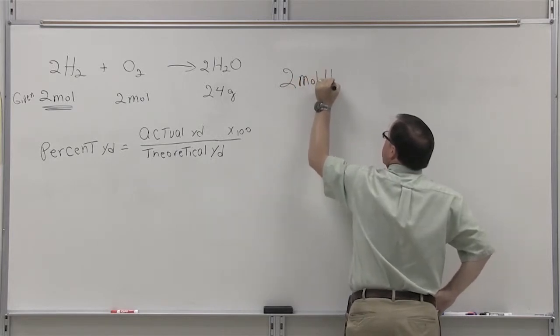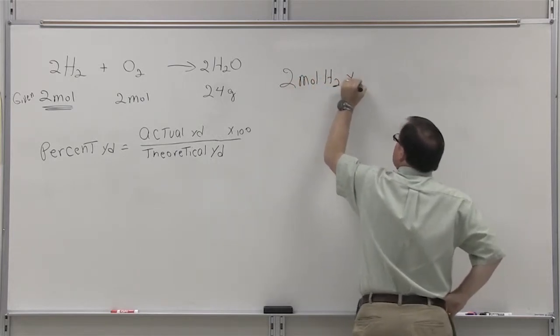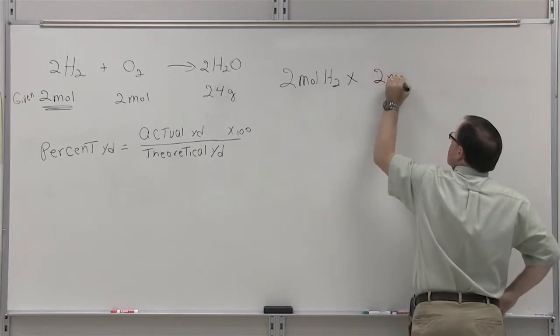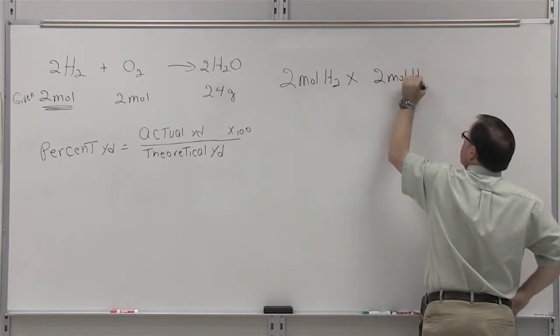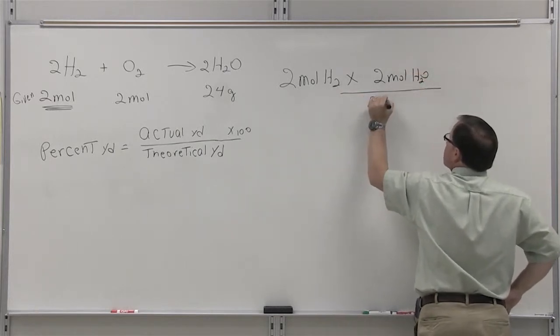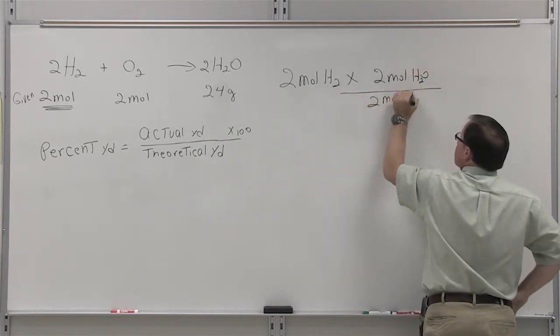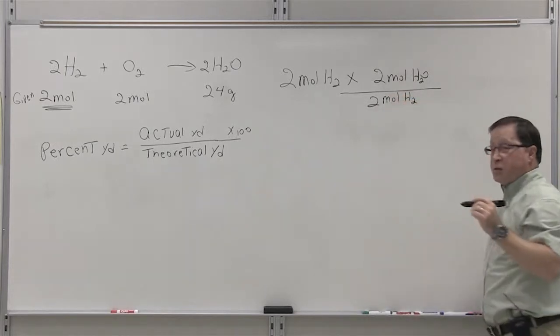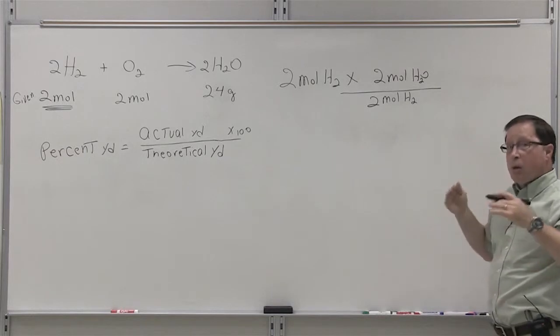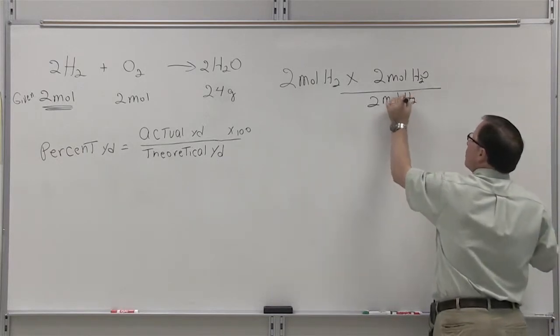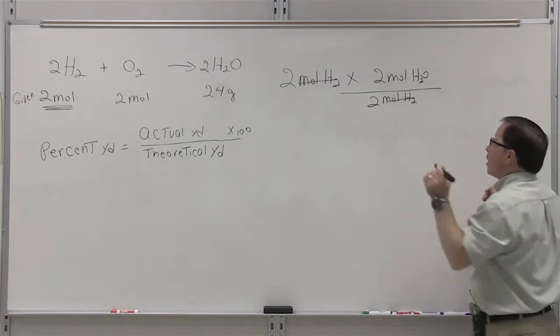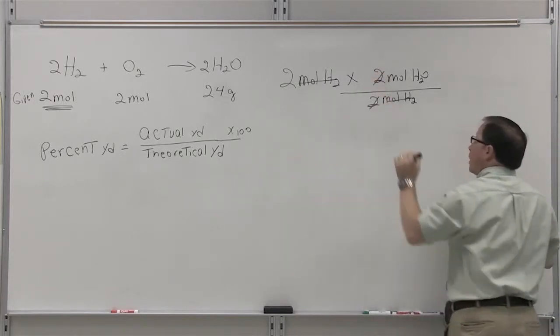Two moles of hydrogen times two moles of water divided by two, per two moles of hydrogen, is our ratio of water to hydrogen. Note that moles of hydrogen will cancel. Note that your twos can cancel.